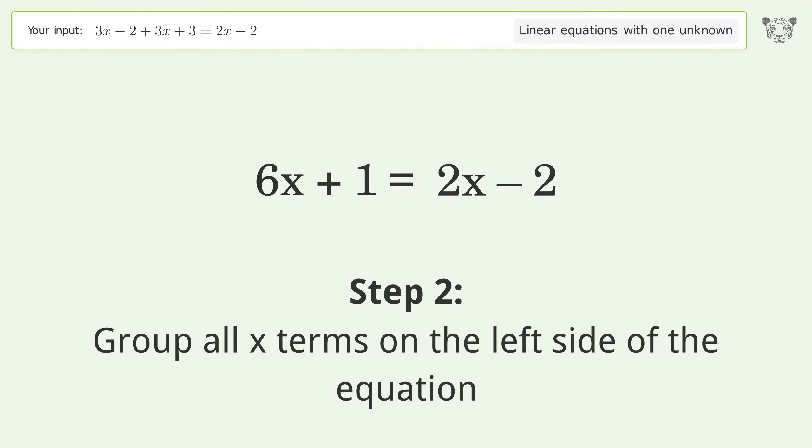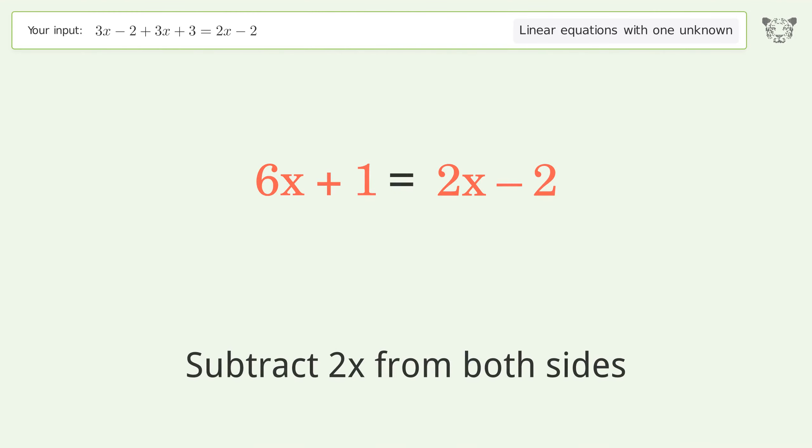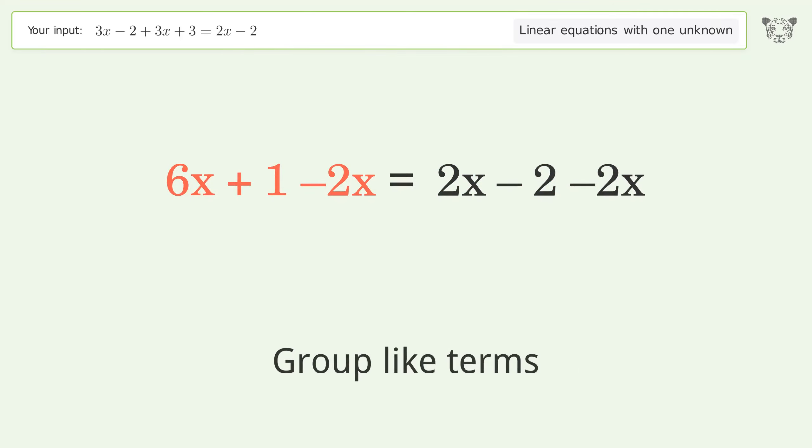Group all x terms on the left side of the equation. Subtract 2x from both sides. Group like terms.